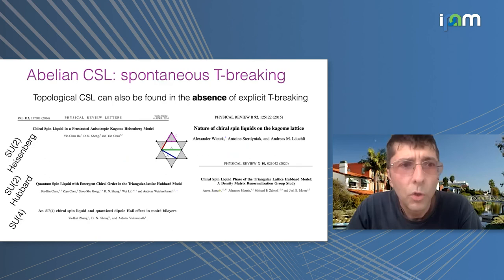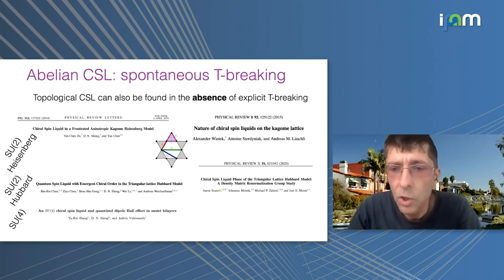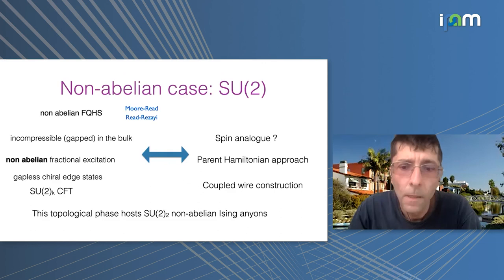A last point: some works by colleagues show you can find the same phase without explicit T-breaking — it can be spontaneously broken. This was found for SU(2) on the extended kagome Heisenberg model, and now also on the Hubbard model on the triangular lattice in an intermediate correlation regime where the system effectively behaves like a spin model with multi-spin interactions, which can also favor this chiral spin liquid.